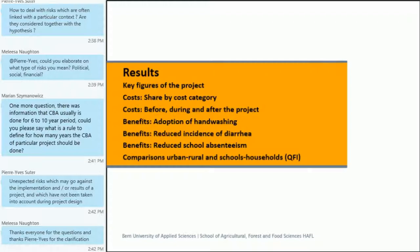Now, what are the results? First, some key figures of the project, then the costs shared by cost category, and then the costs before, during and after the project. Then we look at the benefits: adoption of hand-washing, reduced incidence of diarrhea, and reduced school absenteeism. And then comparing urban and rural, and schools versus households.